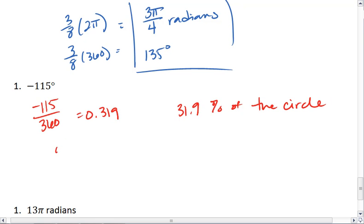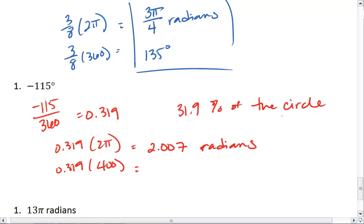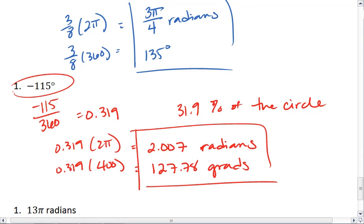I take this number and multiply it by 2π to find the radians, and multiply it by 400 to find grads. Well, multiplying it by 2π gives me about 2.007 radians. And then, if I multiply it by 400, I get 127.78 grads. That's the same as negative 115 degrees.